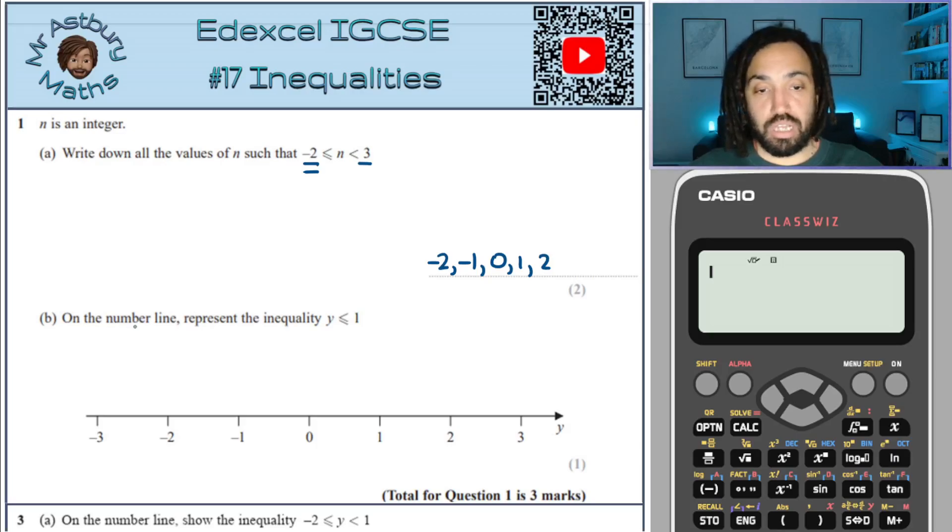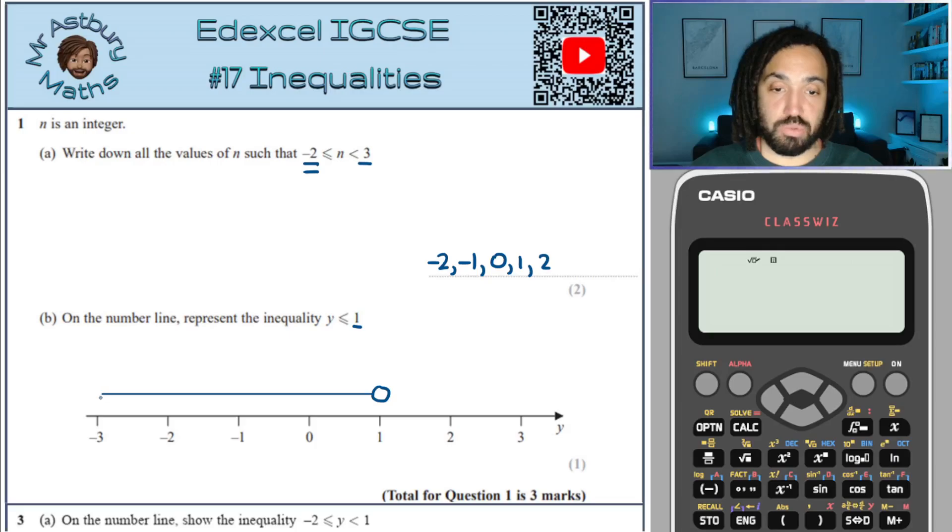Write on the number line representing the quantity y is less than or equal to 1. So we put a circle at 1 and less than means all the numbers that are smaller, which are to the left of the number line. And because it says it can equal 1 we shade in this circle. If it was a strict inequality which means it can't equal 1, then we do not shade in this circle.